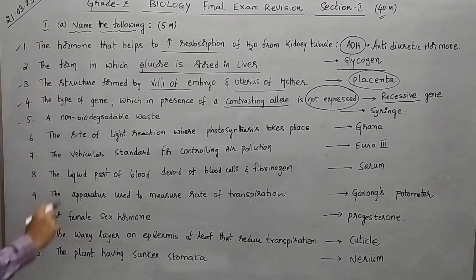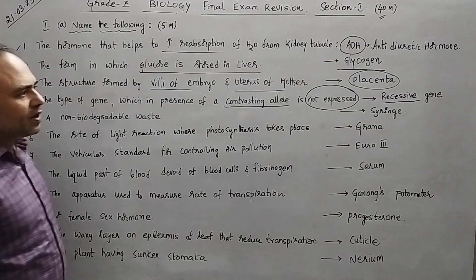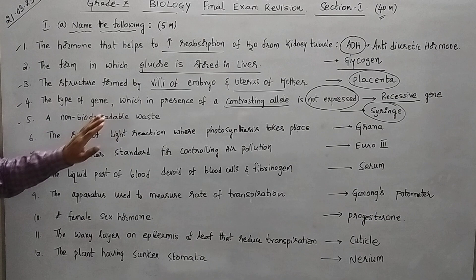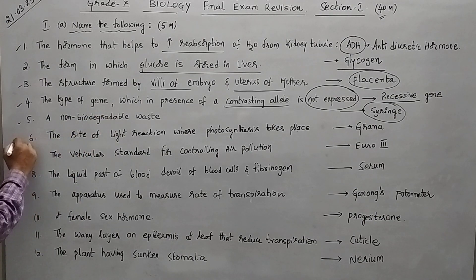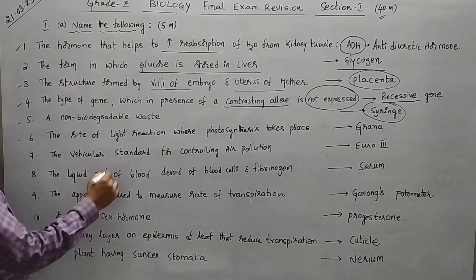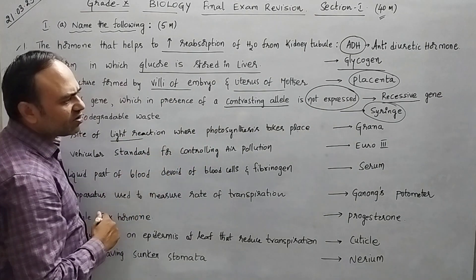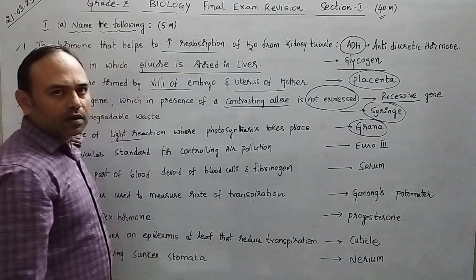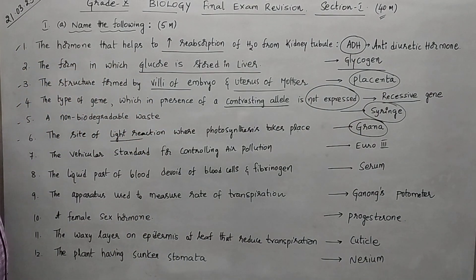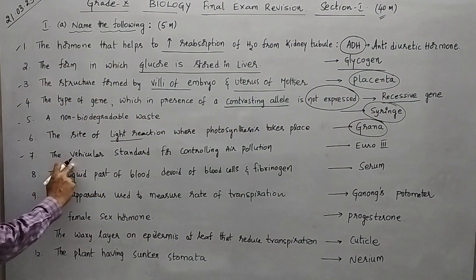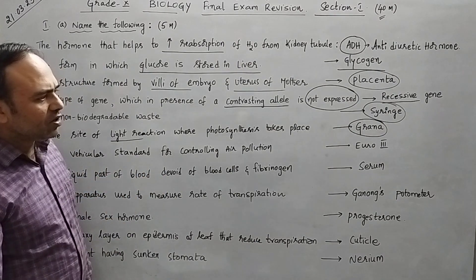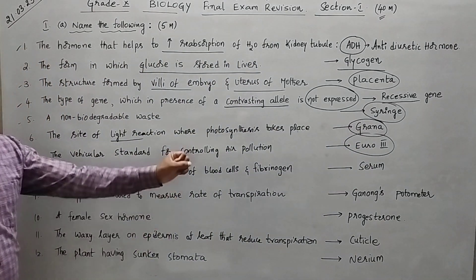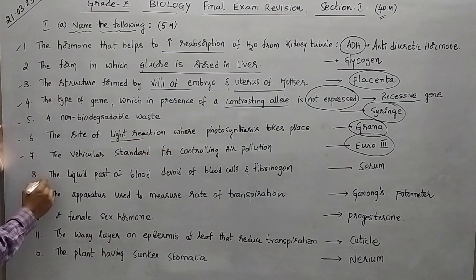Fifth one: a non-biodegradable waste — you can give any example; here I have taken a syringe, so syringe is a non-biodegradable waste. Sixth: the site of the light reaction in photosynthesis — that takes place in the grana. Seventh: the vehicular standard for controlling air pollution — that is Euro 3, write it straight away for one mark.